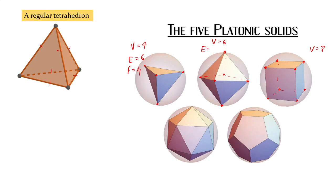How many edges does an octahedron have? You can complete the figure in three-dimensional space and think about it: four on the top, four in the middle, four at the bottom — that gives 12 edges. And the number of faces is of course eight, because it's an octahedron.